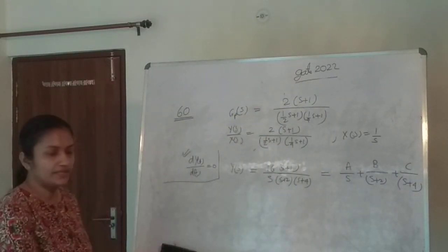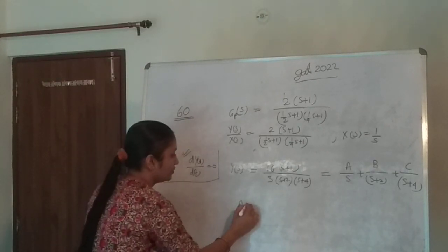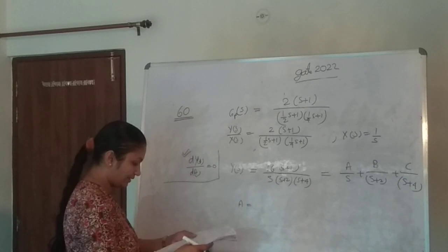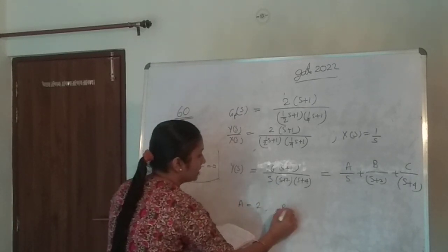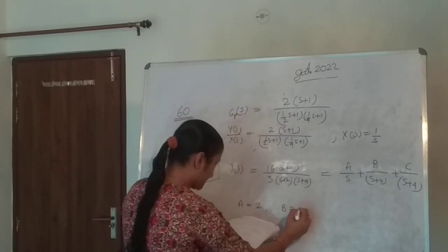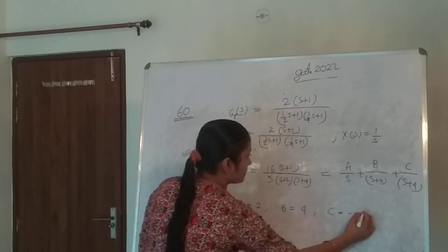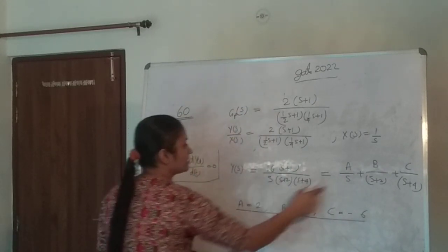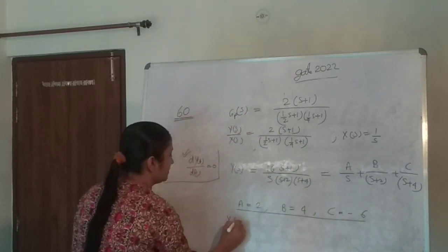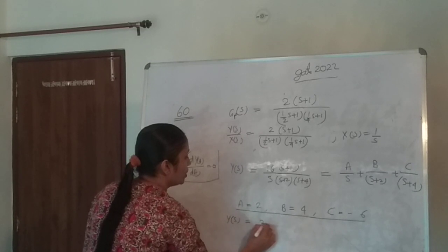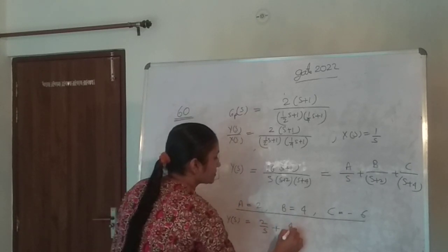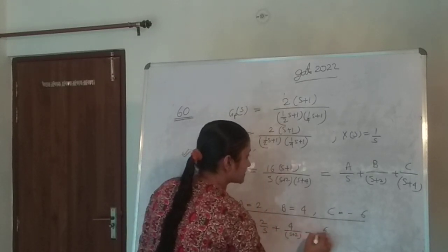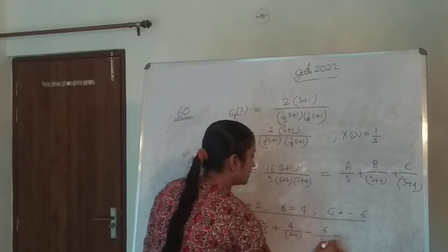Find the value of A, B, C. You'll get the value of A by substituting s equals 0. You will get the value of A is 2. B is 4, and the value of C is minus 6. Substitute this value, you will get y(s) equals 2/s plus 4/(s+2) minus 6/(s+4).